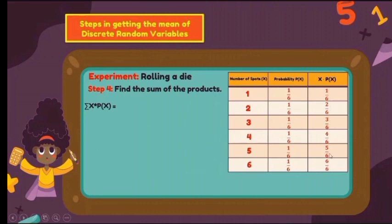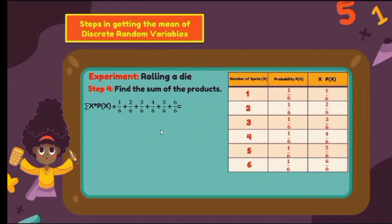Get the sum of the third column. Adding 1/6 plus 2/6 plus 3/6 plus 4/6 plus 5/6 plus 6/6 — since they are similar fractions, copy the denominator and add the numerators. You get 21 over 6, which in lowest terms is 7/2, or in decimal form, 3.5.